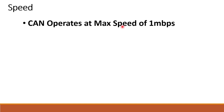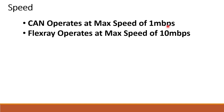Next, we will check the CAN network speed. CAN operates at a maximum speed of 1 Mbps. In contrast, FlexRay operates at a maximum speed of 10 Mbps — that is 10 times faster. FlexRay is mainly used in power steering and high-speed applications.